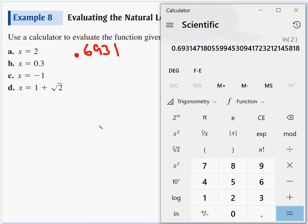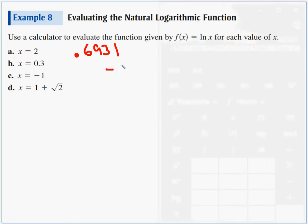For b, 0.3, take the nat log. Negative 1.204, we'll call that four. Negative 1.204, the 9 would round up.